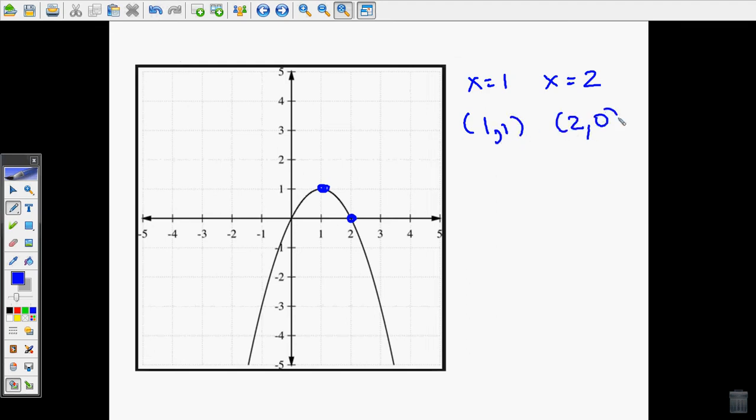I can just do my rise over my run. So I'm going down 1 into the right 1, so the rate of change is negative 1. Or I can do difference of my y's over difference of my x's, which is 1 over negative 1, which is also negative 1. So it works out the same either way. But as you can see, here we had a rate of change of negative 1, whereas here we had a rate of change of 3. So the rate of change is not always the same between all points on a quadratic function.